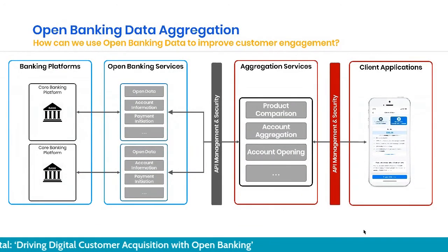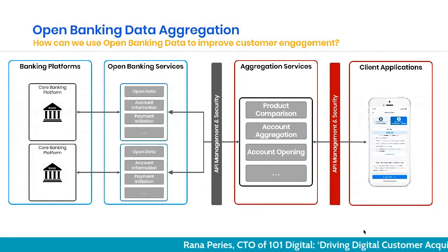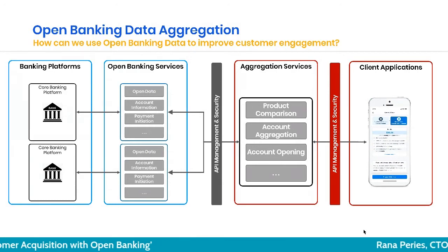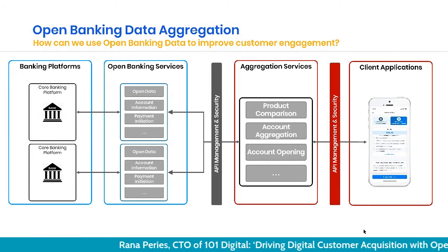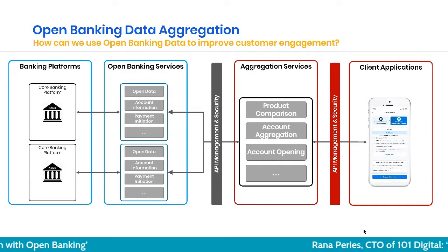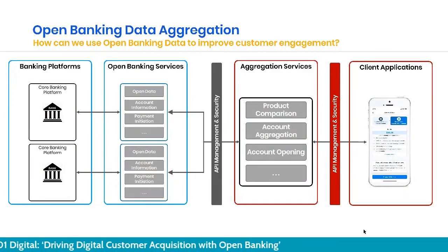The key components of this model: on the far left, banks provide what is mandated by regulators — open banking services covering product information, open data, account information including transactions, and payment initiation. That paves the way for aggregators or AISPs to provide additional APIs like product comparison, account aggregation, and account opening. Finally, there is an application layer that creates various experiences, and those APIs can be plugged into existing apps and ecosystems to broaden distribution.